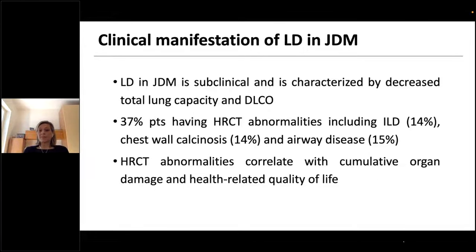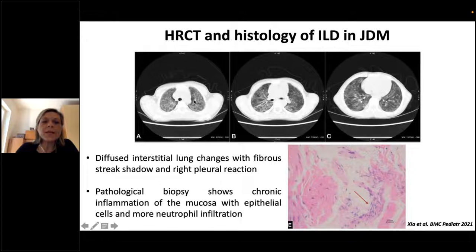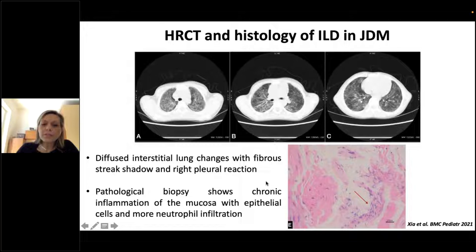Lung disease in juvenile dermatomyositis is clinically characterized by decreased total lung capacity and DLCO. 37% of patients have high-resolution CT abnormalities, including ILD, chest wall calcinosis, and airway disease. High-resolution CT abnormalities usually correlate with cumulative organ damage and reduced quality of life. The CT scan shows diffuse interstitial involvement of the lung with fibrosis, and histologically the patient had chronic inflammation with neutrophil infiltration in the lung.